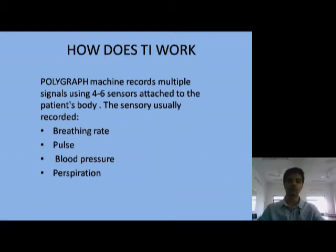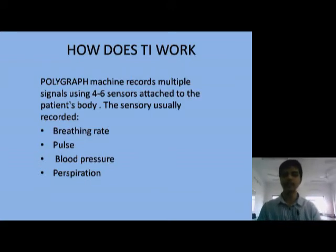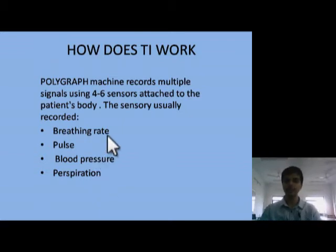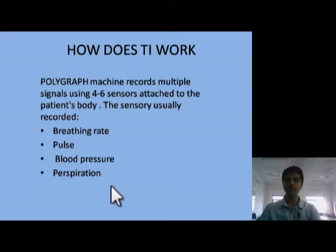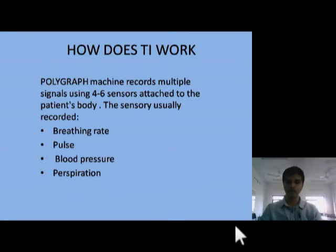How does it work? The polygraph machine technically measures 4 to 6 responses attached to the patient's body. These include breathing rate, which measures lung and diaphragm movements; pulse, measured by hand movements; blood pressure, measured by a cuff and sphygmomanometer; and perspiration, measured by galvanic skin responses. Perspiration refers to sweating and unusual body movements of the patient.